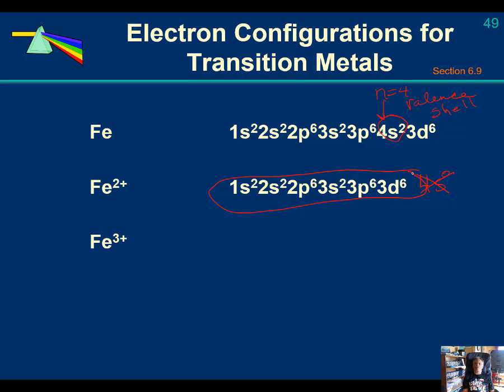The next highest energy shell are the 3d's. And the 3d's, there are 6 electrons in this particular plus 2 cation.